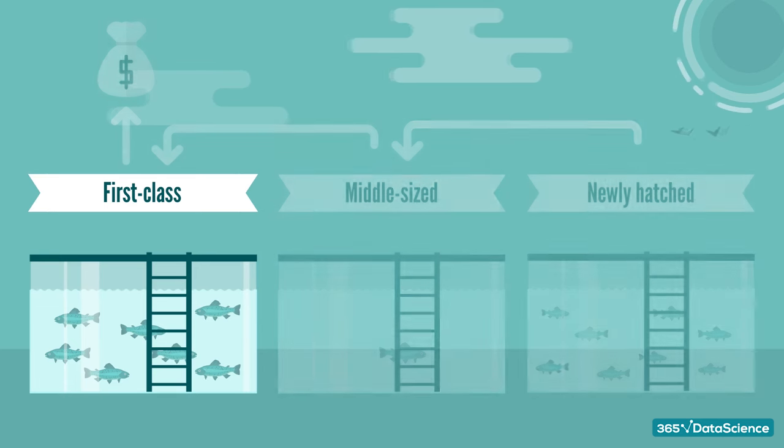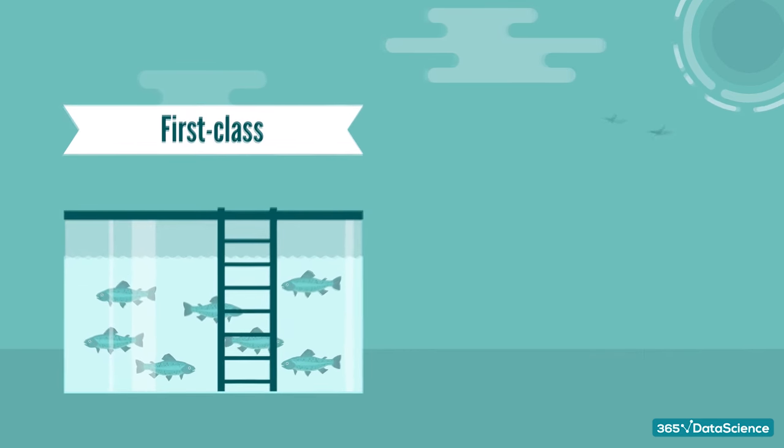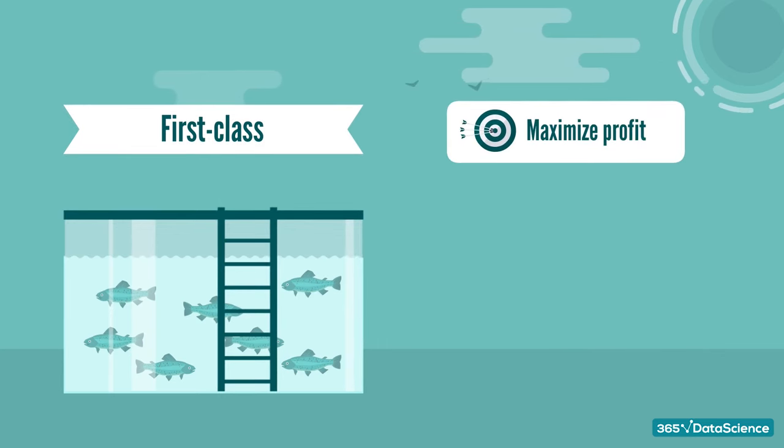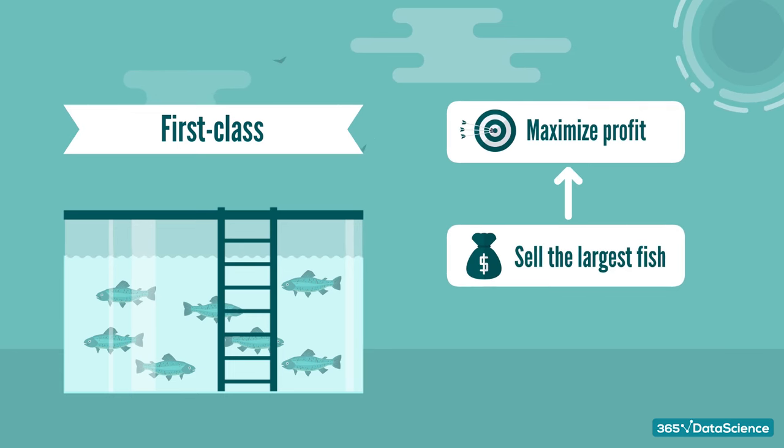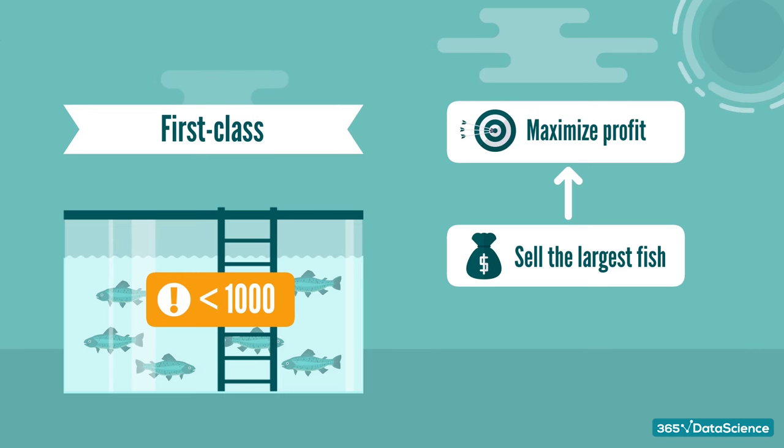Now, what's crucial to know is that first-class fish are the largest among all the fish groups. Why is that so important? Well, as a business owner, your goal is to maximize profit. And to achieve that, you must sell fish when they reach the largest possible size, as customers pay by the pound. What's more, there's a regulation set by the government that allows you to keep 1,000 fish maximum in the first-class reservoirs. All things considered, selling the first-class fish as large as possible would be your best strategy to increase profit.